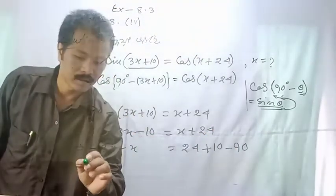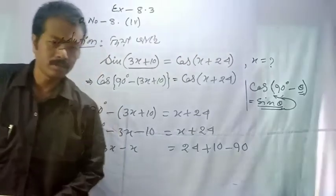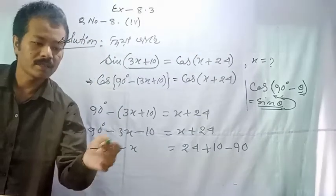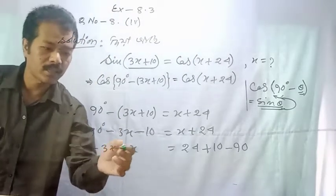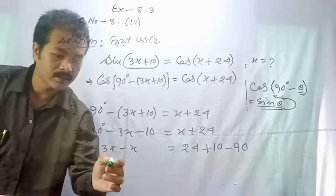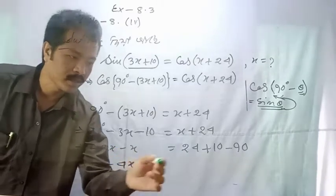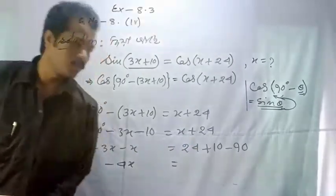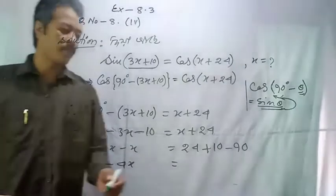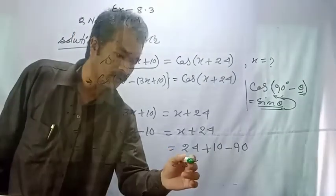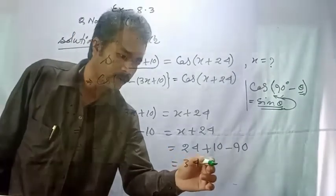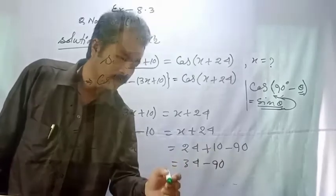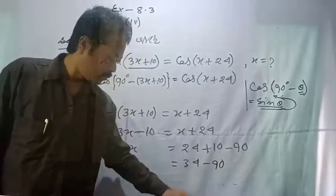Let's take a whole: 3x minus 3x minus x means minus 4x. It will be 24. This is cos 44 minus 19. So the whole equation.